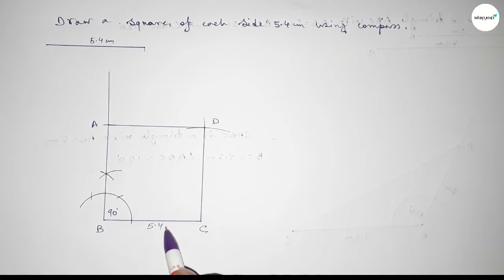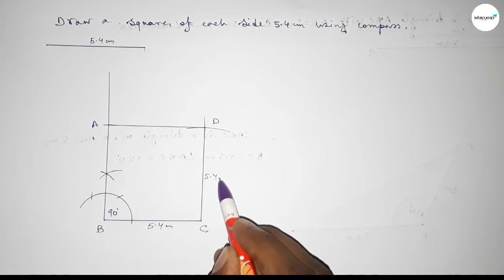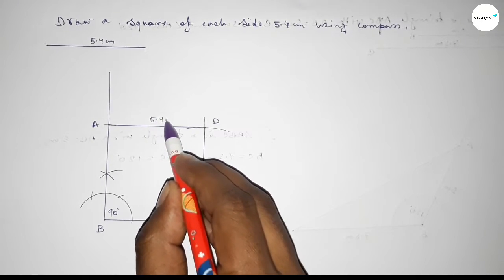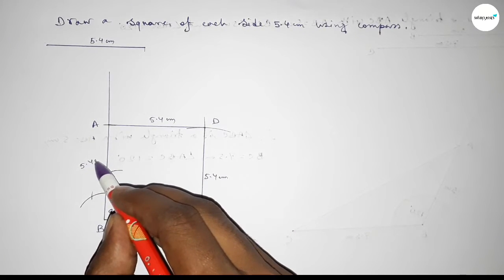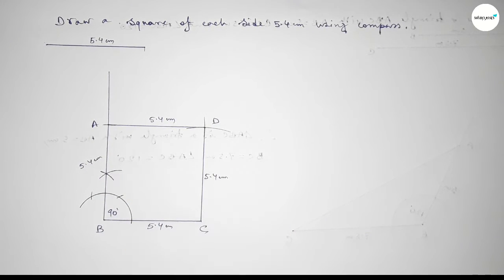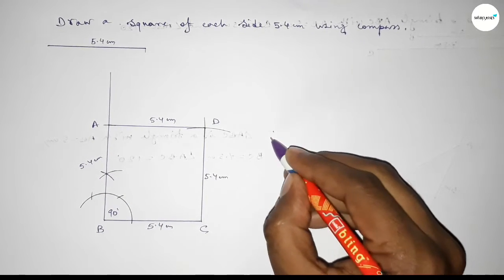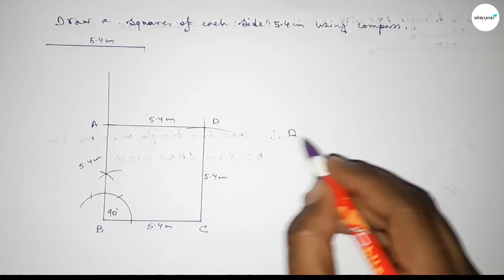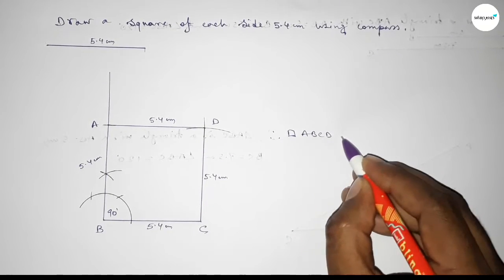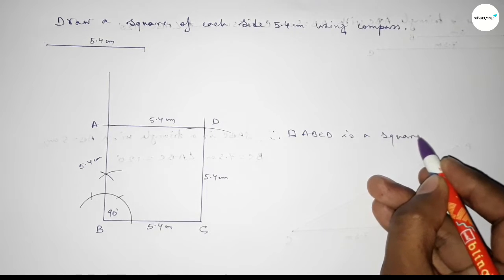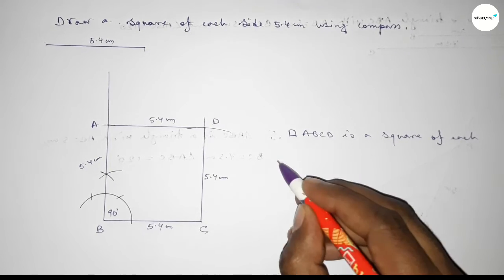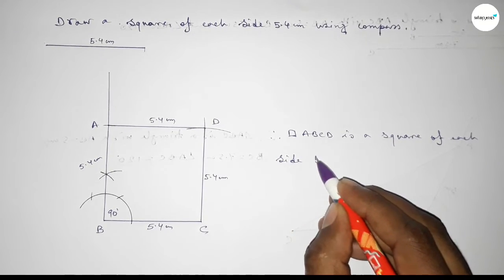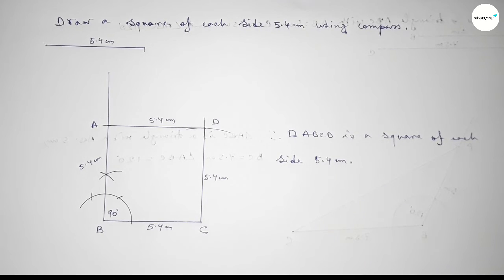Each side of the square measures 5.4 centimeters — all four sides are equal. That's all. Thanks for watching. If this video is helpful to you, please share it with your friends, and please like and comment on my video.